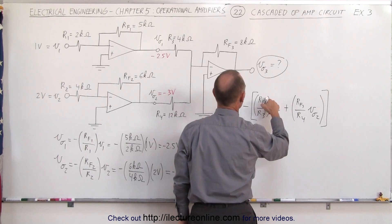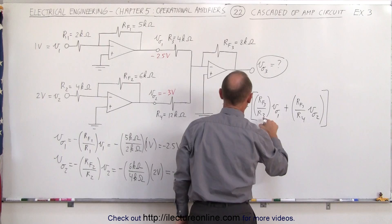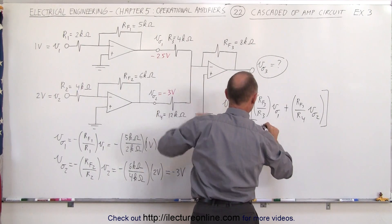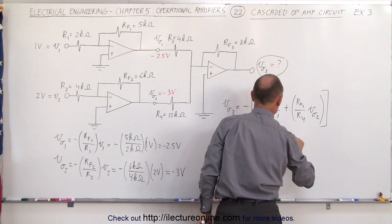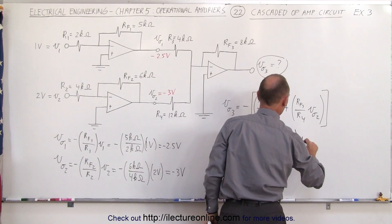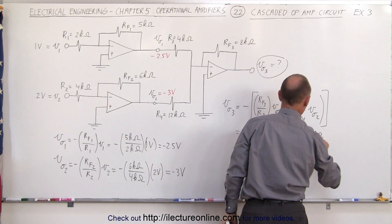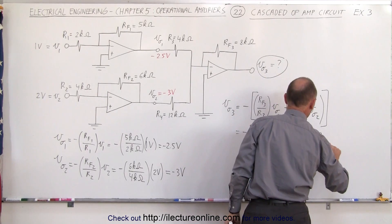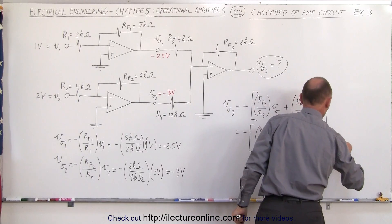This is equal to minus the quantity: Rf3 which is 8 kilo ohms divided by R3 which is 4 kilo ohms, multiplied times V01 which is negative 2.5 volts, plus the ratio of 8 kilo ohms to R4 which is 12 kilo ohms times the voltage of minus 3 volts.